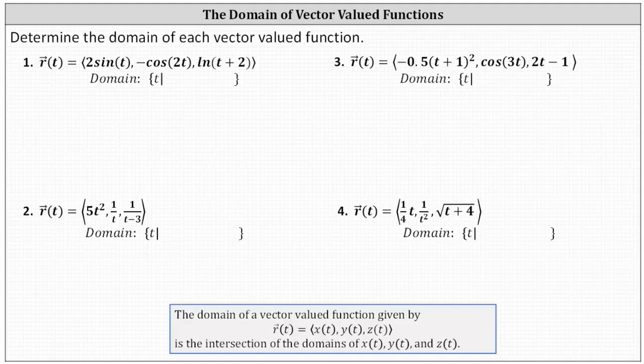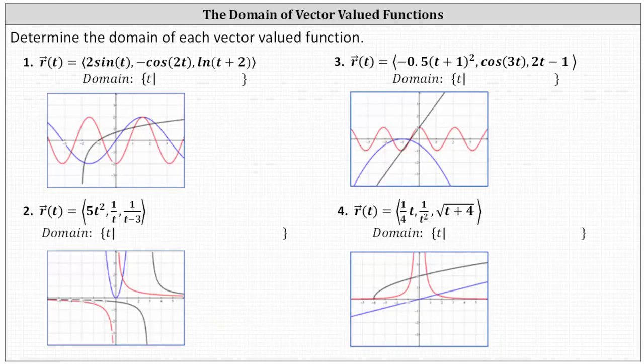For example, for number one, x of t equals two sine t is graphed in blue, y of t equals negative cosine two t is graphed in red, and z of t equals natural log of the quantity t plus two is graphed in black. The domain of the vector-valued function is the intersection of the domains of the three components.